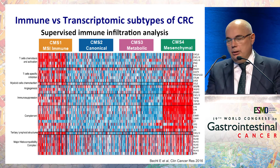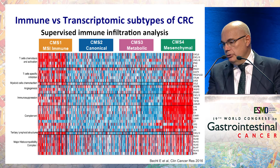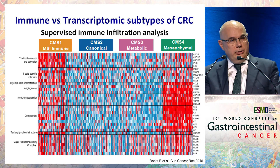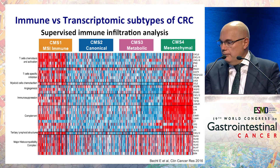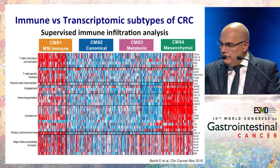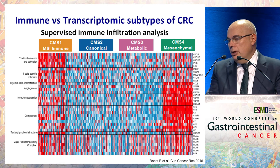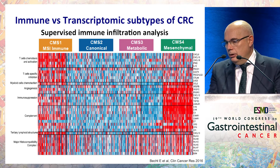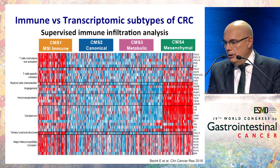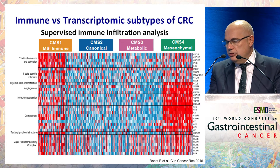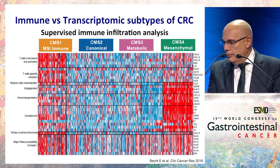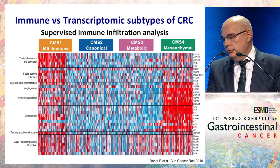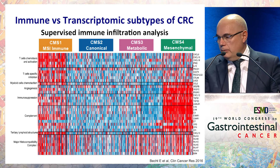There is also some regulation of complement, but the most important finding for this population is that they have high MHC class 1 regulation-related genes. On the other hand, the mesenchymal subtype — the immune-excluded or inflamed tumors — shows no significant regulation of cytokines or immune checkpoints, but there is regulation of genes related to myeloid-derived suppressor cells. This is a very repressive phenotype, with other genes related to Tregs, for example TGF-beta, and complement is also downregulated.